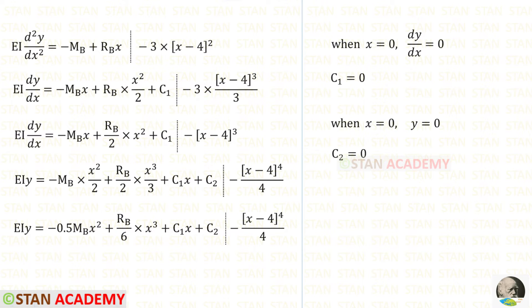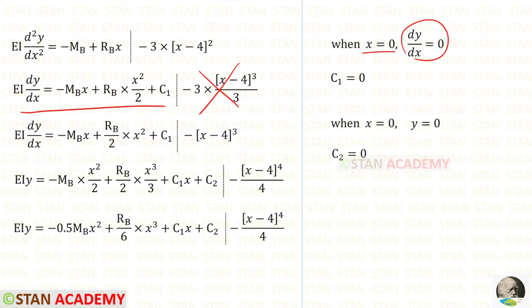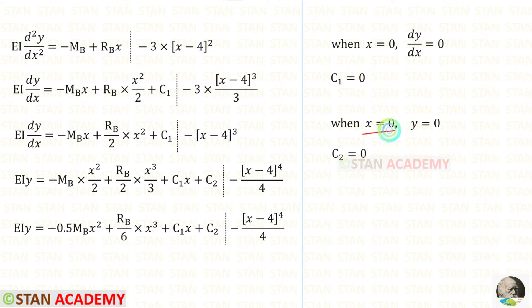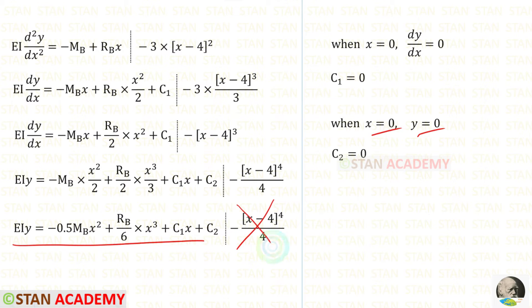At point B there is a fixed support, so there will be no slope. When x is 0, dy/dx will be 0. Applying this condition to the slope equation — we should not consider the Macaulay bracket term — we get C1 equal to 0. Also at the fixed support there will be no deflection, so when x is 0, y will be 0. Applying this to the deflection equation we get C2 equal to 0.